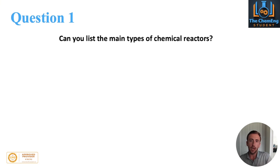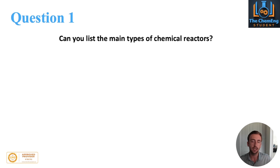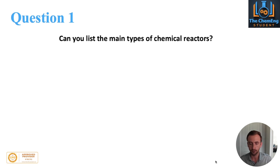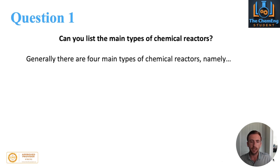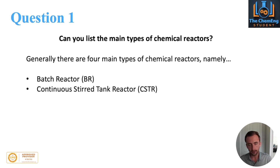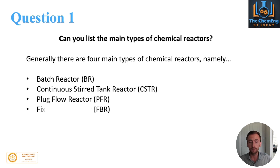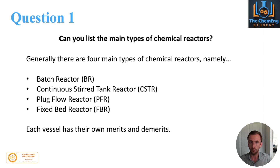Question number one asks us to list the main types of chemical reactors. A fairly simple and standard question that you should expect if your job has something to do with reactors. Generally speaking we have four main reactor vessels: batch reactors, continuous stirred tank reactors known as CSTRs, plug flow reactors known as PFRs, and fixed bed reactors or FBRs.